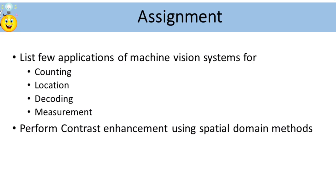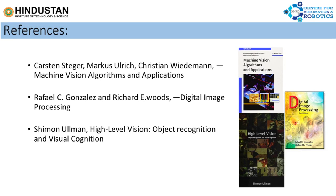The assignment for this session is to list a few real-time applications from daily life where machine vision is applied for counting, location, decoding, and measurement. You could also perform contrast enhancement on an image with poor contrast or identify an object using spatial domain methods. The references used for this lecture are available. For any queries, you can contact via the email available in this presentation. Thank you for listening to this lecture.